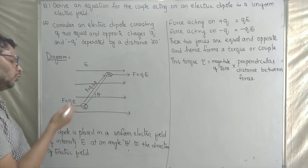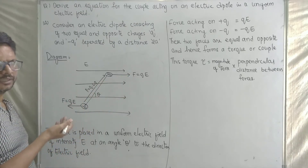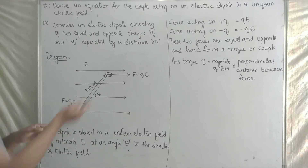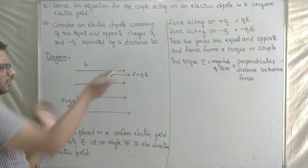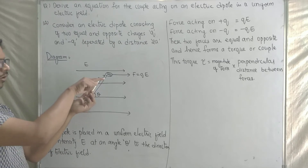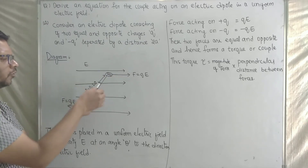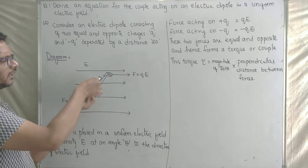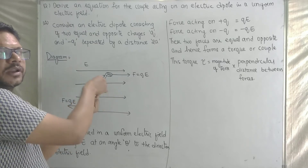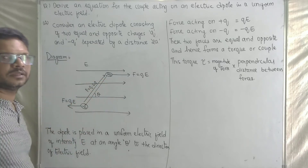The force on plus Q is plus QE and on minus Q is minus QE — two forces in opposite directions. These two forces cause the dipole to rotate. The dipole tries to rotate and align with the electric field, forming a torque.